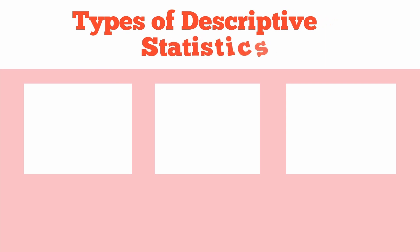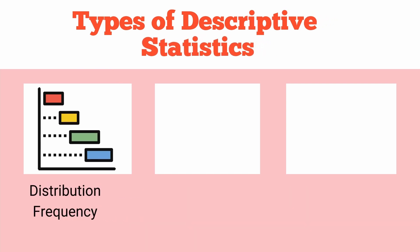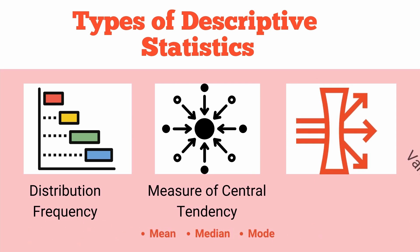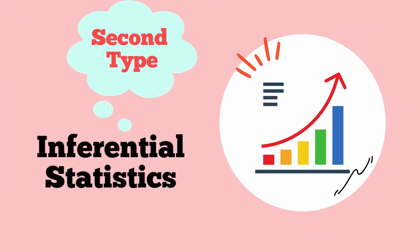There are three types of descriptive statistics. The first is distribution, which concerns the frequency of each value. The second is the measure of central tendency, which analyzes the averages of values — further divided into mean, median, and mode. The third is the measure of variability or dispersion, which concerns how spread out the values are — further divided into variance, standard deviation, range, and z-score.